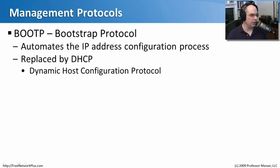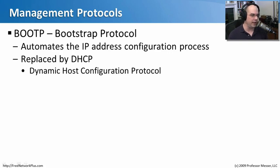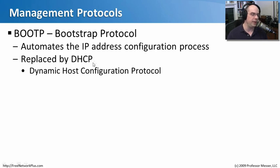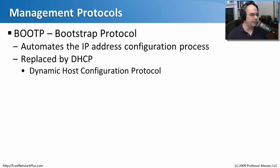Let's begin with management protocols. The first one is a bit of an older protocol called BootP, or the Bootstrap Protocol. BootP was the first method computers ever used to automate the process of getting an IP address. These days, that's done by DHCP, which stands for Dynamic Host Configuration Protocol — really the next generation of BootP. Sometimes we even call DHCP the BootP process, because they are very, very similar to each other in the way they operate.